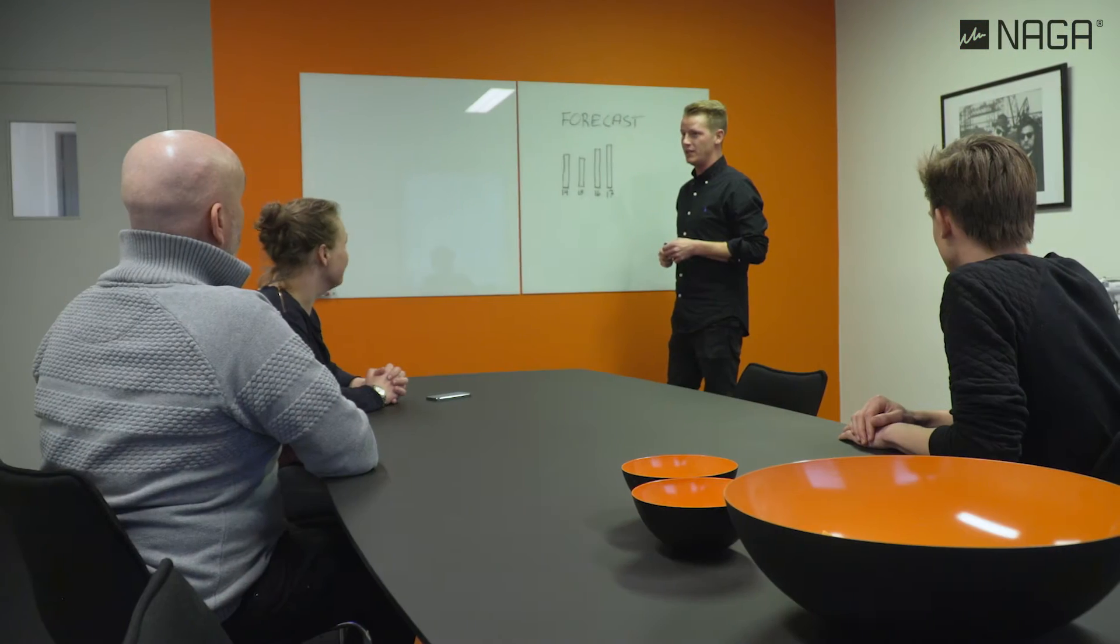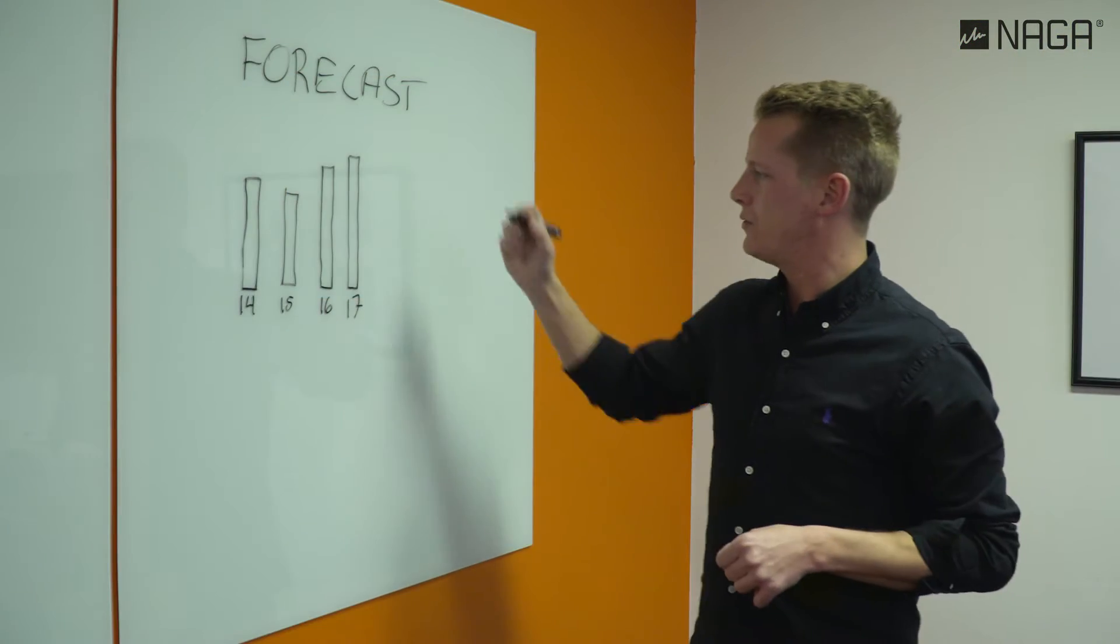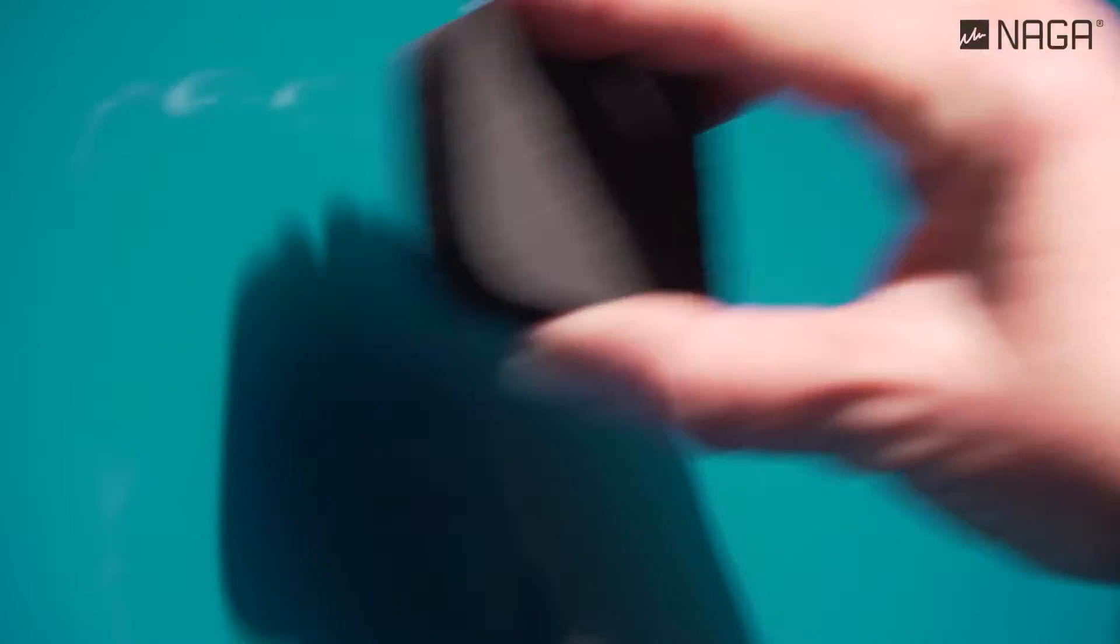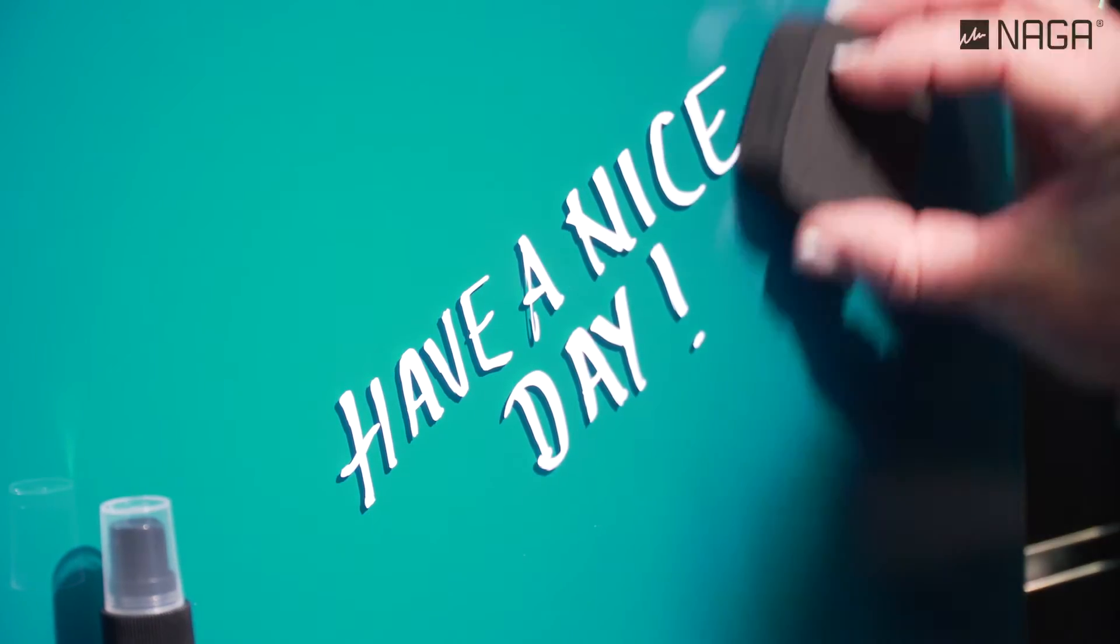You can write on the board with the provided chalk marker or with any ordinary whiteboard marker. Once the text has dried, you can easily wipe the board with a board eraser or paper towel.